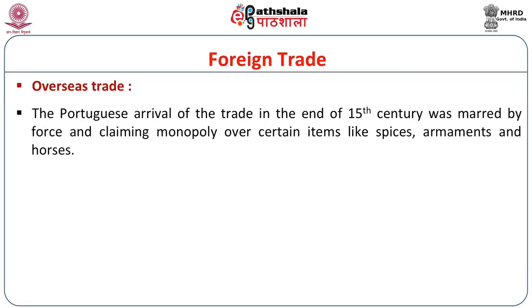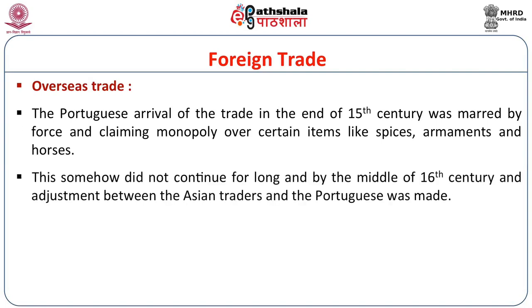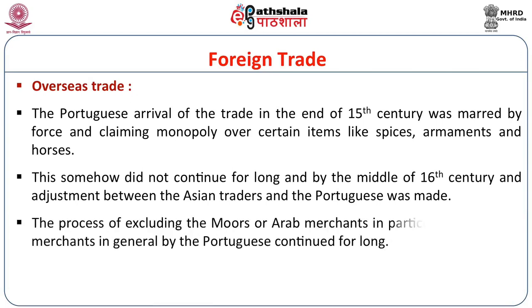Overseas trade during this time saw the appearance of the Portuguese, especially at the end of the 15th century. They traded in spices, armaments and horses and tried to monopolize the business. They had a traditional rivalry with the Muslim merchants. By the middle of the 16th century, adjustments had to be made between the Asian traders and the Portuguese, because the Portuguese understood that the bulk of trade could not be handled by them single-handedly. The process of excluding Arab and Muslim merchants did continue for long, but was not entertained by any of the rulers in India.